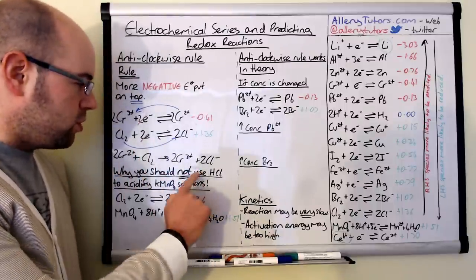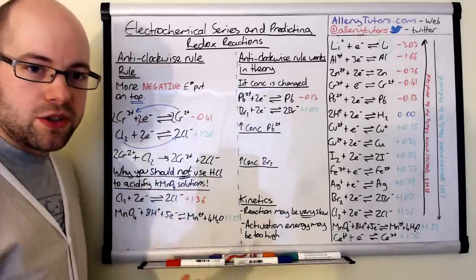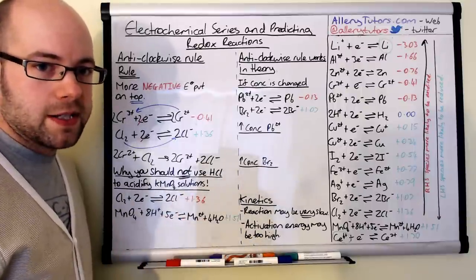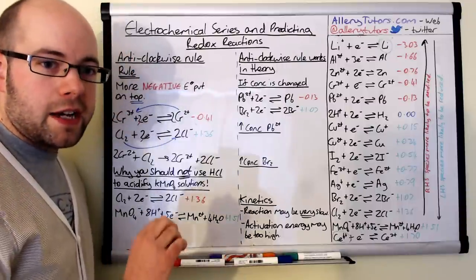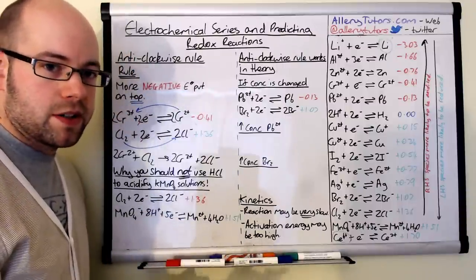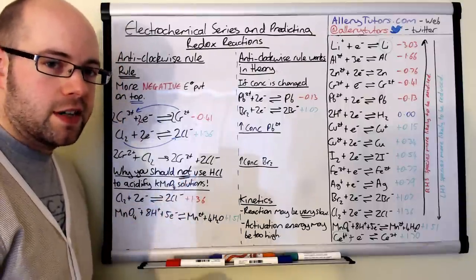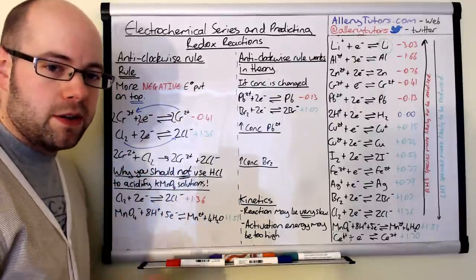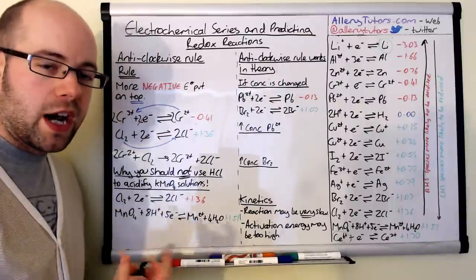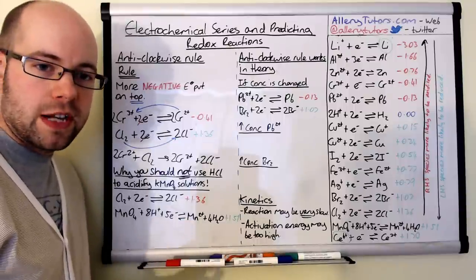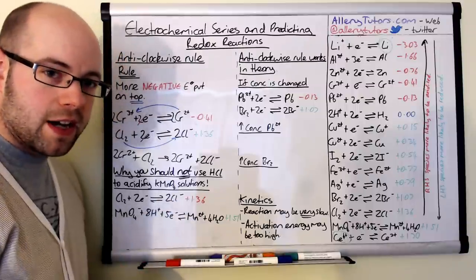Sometimes they'll ask you why you should not use HCl to acidify potassium permanganate solution. This is particularly relevant in titrations where you're using permanganate as an oxidizing agent — for example, to oxidize Fe2+ to Fe3+ in a redox titration. You have to acidify your permanganate, but you shouldn't use hydrochloric acid. We're going to explain why using E0 values. Hydrochloric acid dissociates into H+ ions and Cl− ions, so I've written down the equation with Cl− ions: Cl2 + 2e− → 2Cl−. I've also written the manganate equation at the bottom.